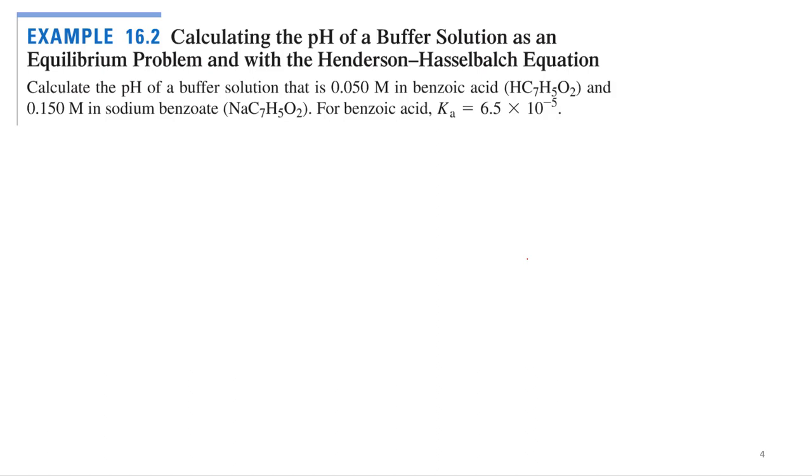Alright, so let's try out the Henderson-Hasselbach equation with example 16.2. Calculate the pH of a buffer solution as an equilibrium problem with the Henderson-Hasselbach equation. Calculate the pH of a buffer solution that is 0.050 molar benzoic acid, C7H5O2, and 0.150 molar sodium benzoate. For benzoic acid, Ka = 6.5 times 10 to the negative 5th.